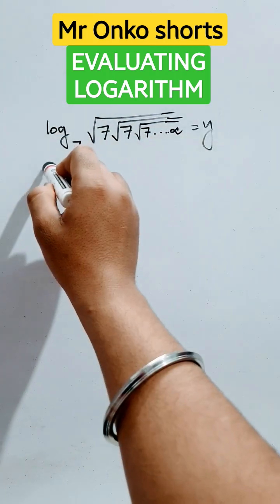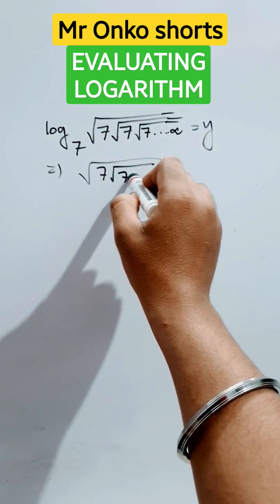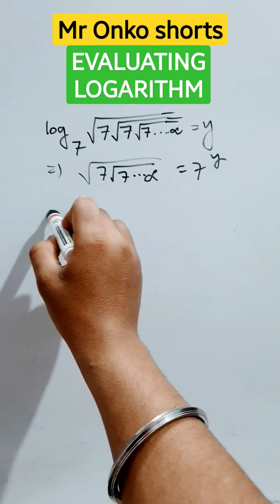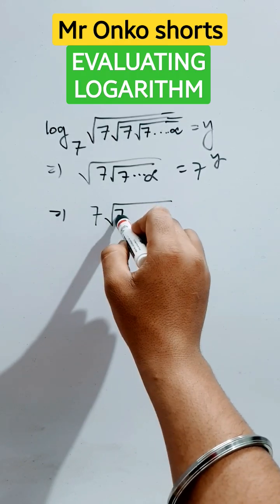First of all, according to the logarithmic property, this can be written as 7 to the power y. Now take square on both sides, so it will be 7 to the power 2y.